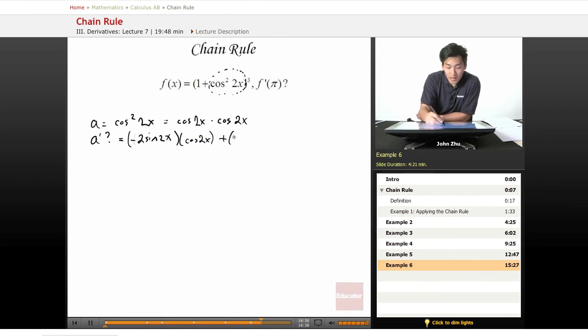So it would be negative 2 sine of 2x times cosine of 2x plus, same thing, negative 2 sine of 2x times the first part. And if we simplify that out, we just get negative 4 sine of 2x times cosine of 2x.